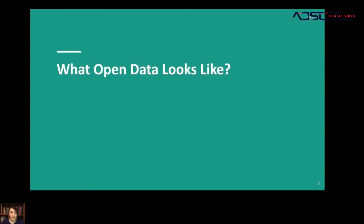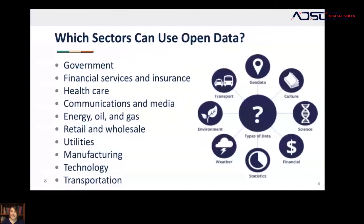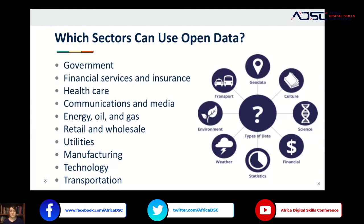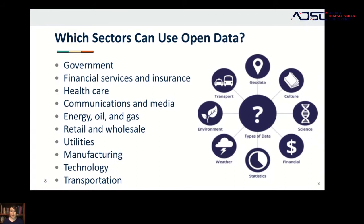Now that you know what open data is, let me get more specific about the types of open data that are out there. Open data is used in a lot of different fields — some obvious, like government data, which can include information about the population; health data, which might feature statistics on leading causes of death or common COVID symptoms; financial data about hotel room prices or the history of inflation; and communication and media, which could tell you how much traction an article has generated.